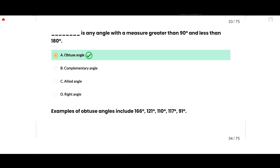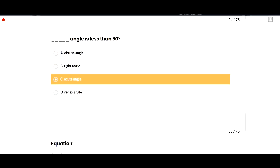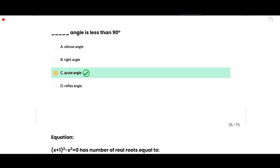An obtuse angle is any angle with a measure greater than 90 degrees and less than 180 degrees. Examples include 166°, 121°, 110°, 117°, and 91°. So option A is correct. An acute angle is always less than 90 degrees, so option C is correct.